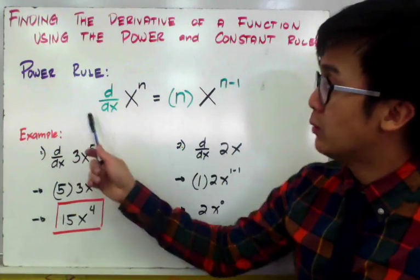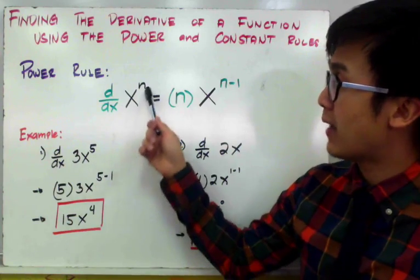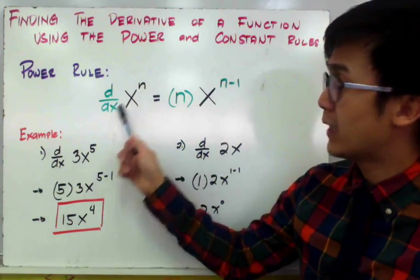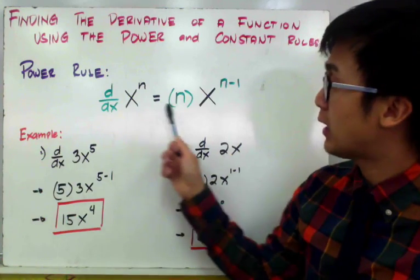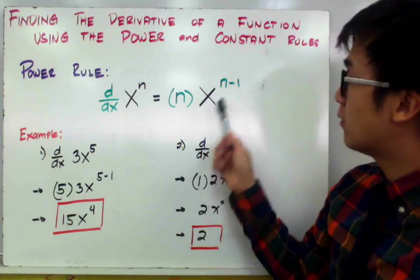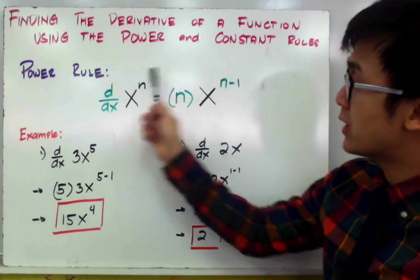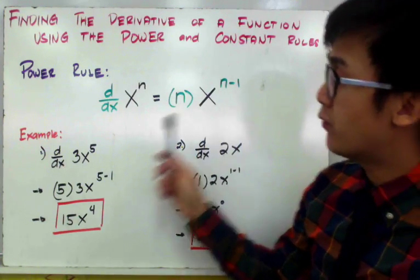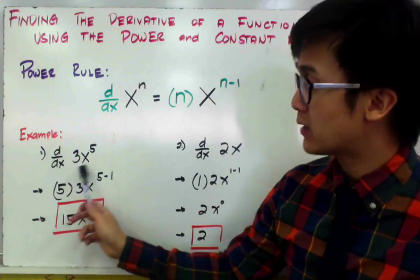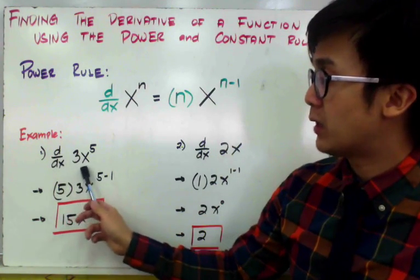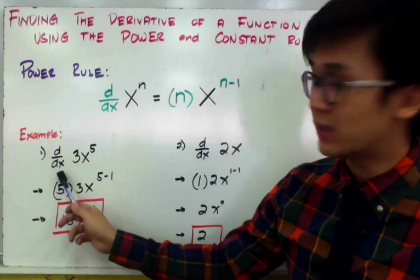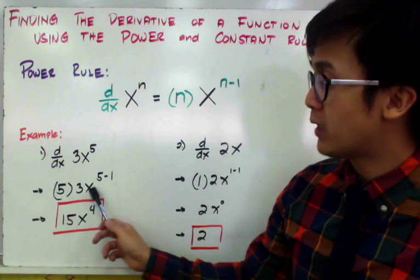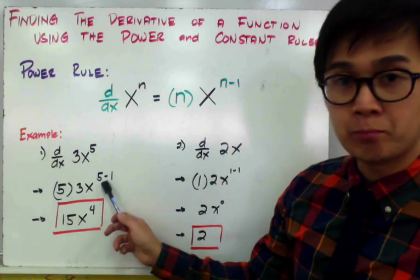The power rule is basically: given a function x to the n, if we're going to find the derivative of x raised to n in terms of x, it is simply equal to n times x raised to n minus 1. So if we're going to use this formula or rule in finding the derivative of a function, let's say 3x raised to the 5th power, the derivative of 3x to the 5th in terms of x is simply 5, which is your exponent, times 3x raised to 5 minus 1.